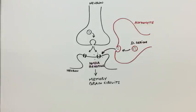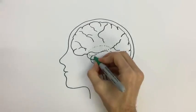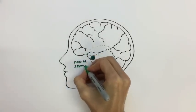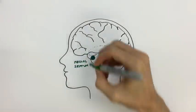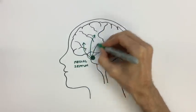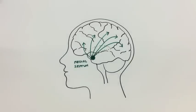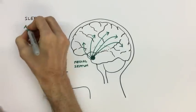But when d-serine isn't available, connections between neurons don't occur properly, and this is one of the causes of schizophrenia. Another well-known aspect of schizophrenia is the lack of acetylcholine in patients' brains. Acetylcholine is a neuromodulator released in the brain as a function of arousal and alertness — it is low during sleep but very high during wakefulness and activity.